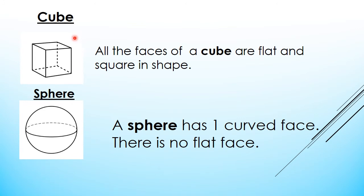Today we will learn in more detail about cubes, spheres, and cylinders. So, what is a cube? A cube is a 3D shape formed when you join six squares together. You know that a square is a 2D shape with four equal sides. When you join six squares together, as you can see in this cube, the front, back, top, bottom, and side faces are all squares.